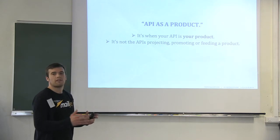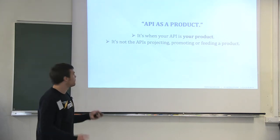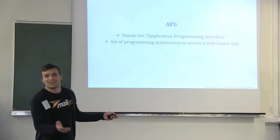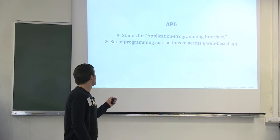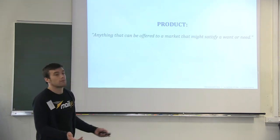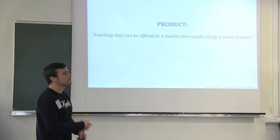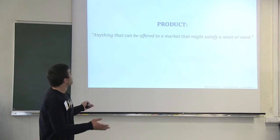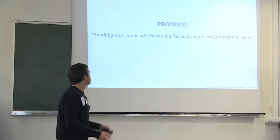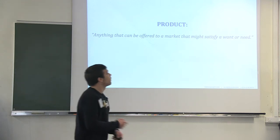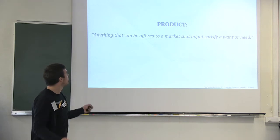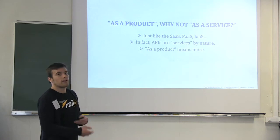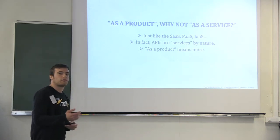The particularity is that our API is the product. You know what an API is — Application Programming Interface. But what is a product? There are many definitions. It comes from economics at the beginning. In a general way, it's anything that can be offered to a market that might satisfy a want or a need. It's a broad definition. So if we dig a little bit deeper, we can start to think about what is the difference between a product and a service.